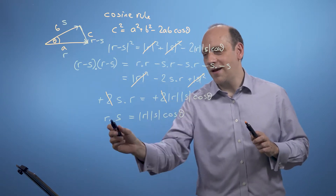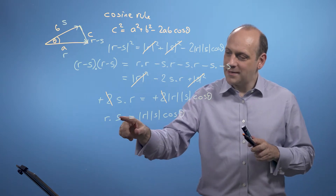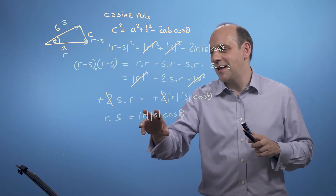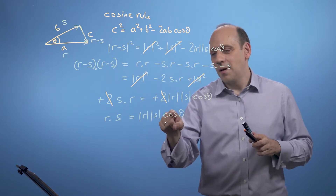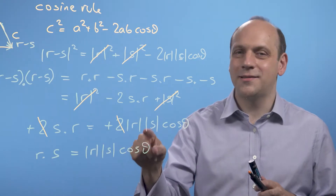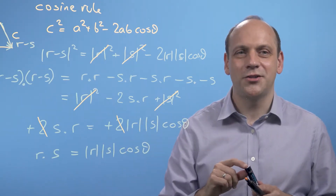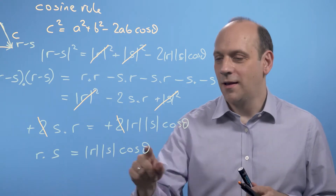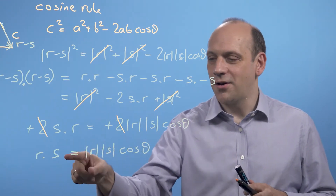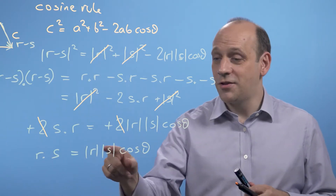So what we've found here is that the dot product does something quite profound. It takes the size of the two vectors — if these were both unit length vectors, those would be 1 — and multiplies by cos of the angle between them. It tells us something about the extent to which the two vectors go in the same direction. Because if theta was 0, then cos theta would be 1, and r dot s would just be the size of the two vectors multiplied together.